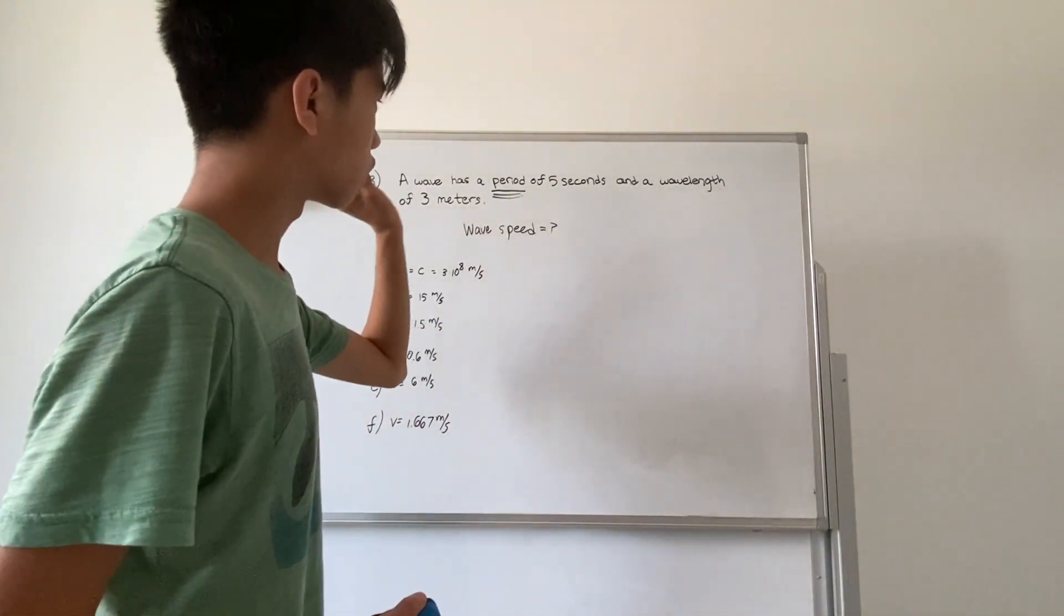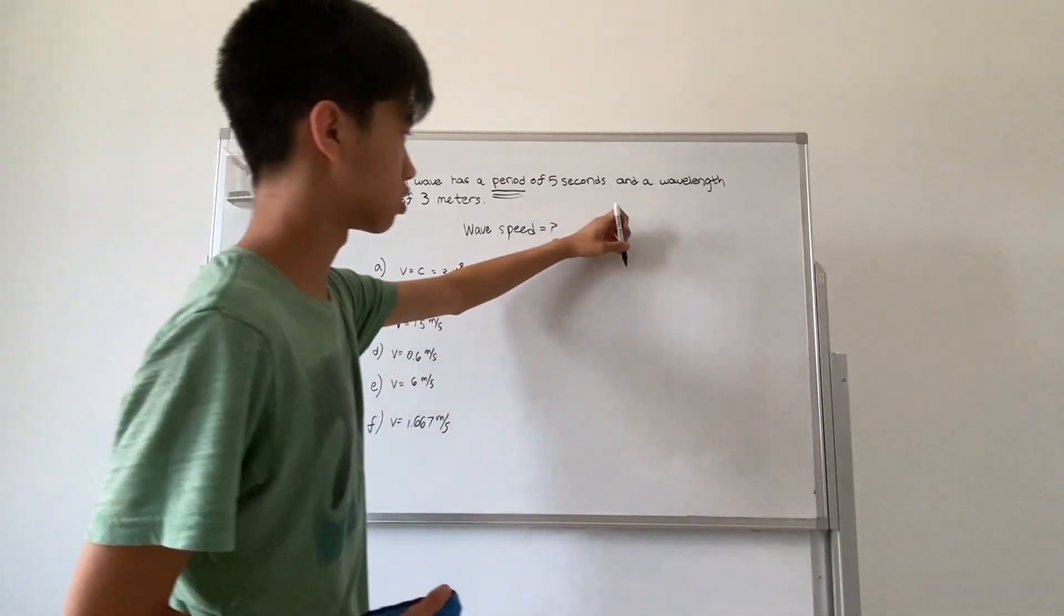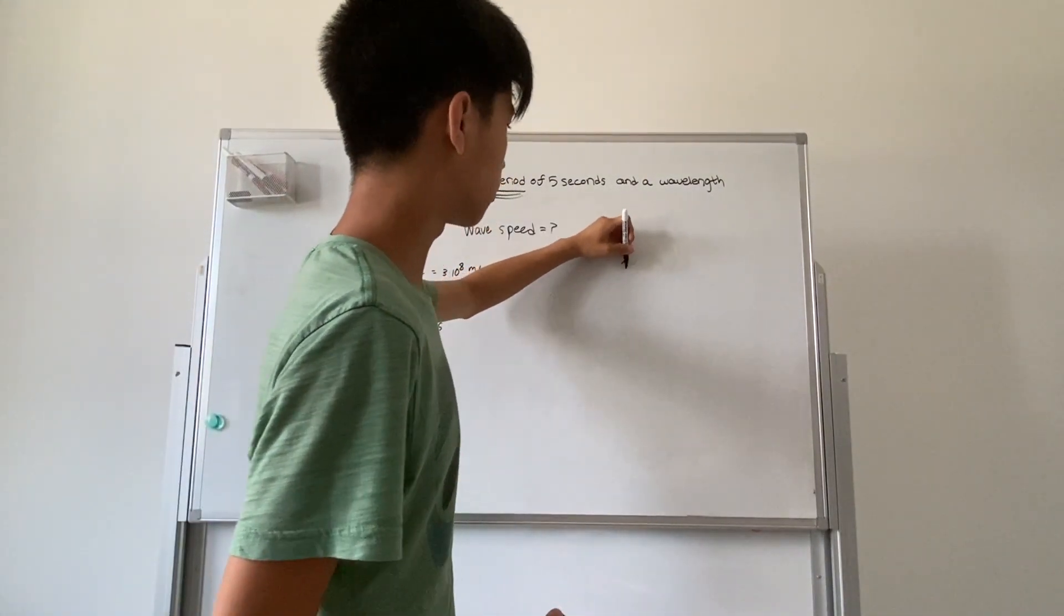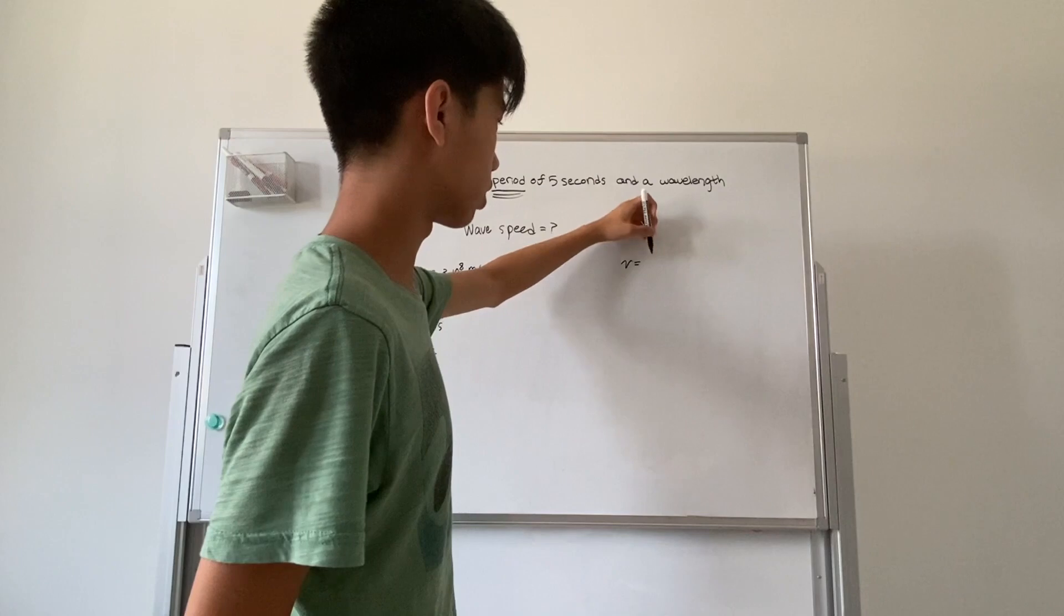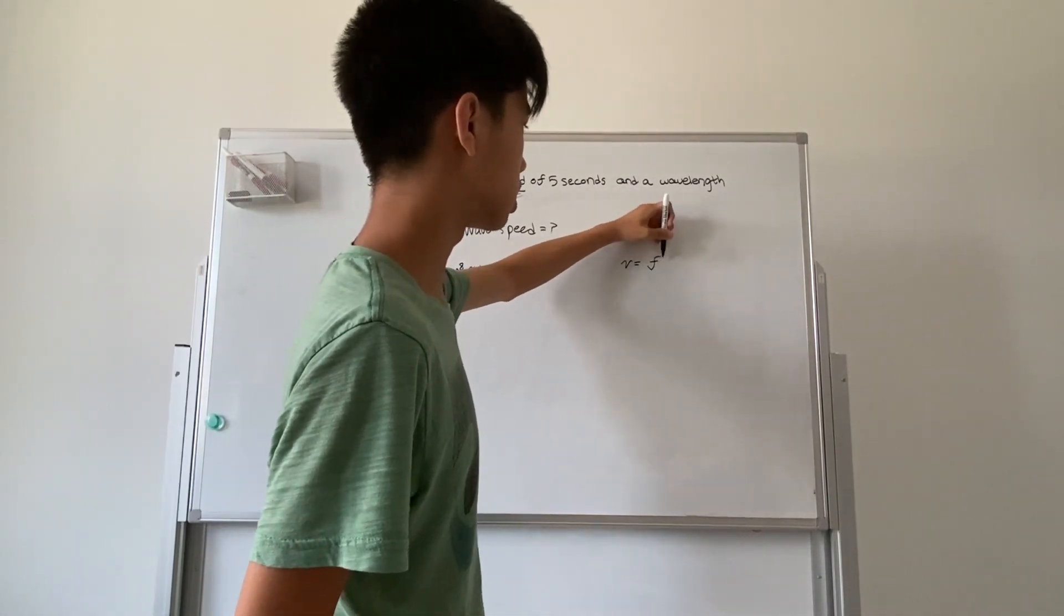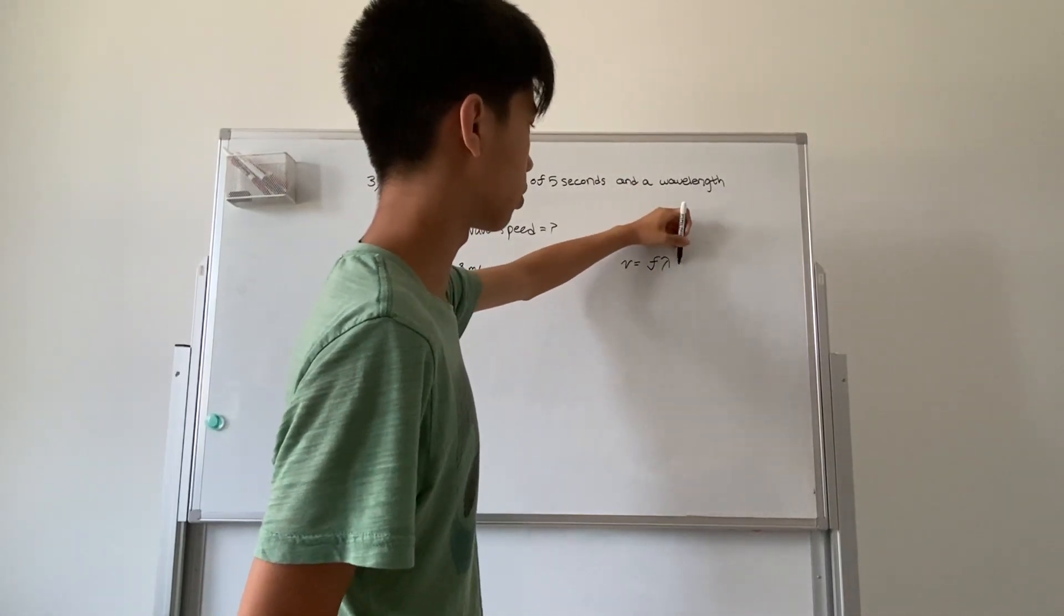The way to solve this problem is quite straightforward. First we give you the wave equation which is velocity equals frequency times the wavelength of the wave.